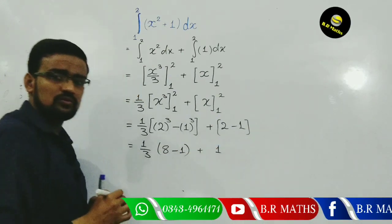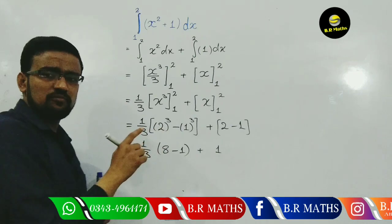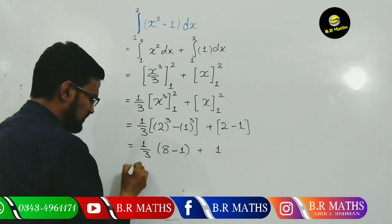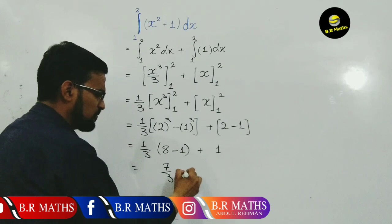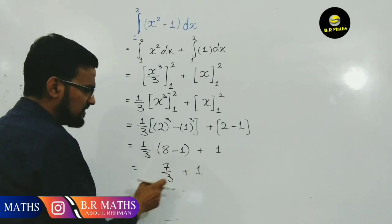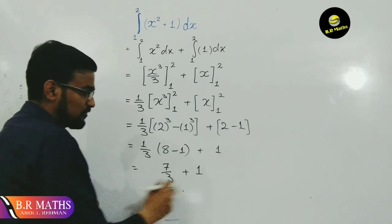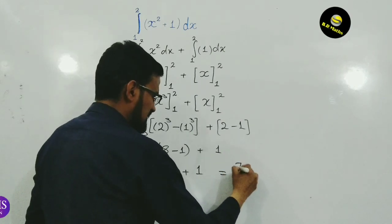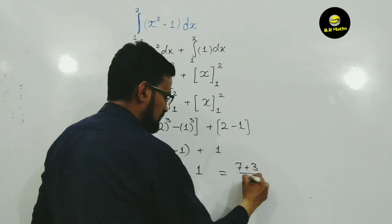So 8 minus 1 means 7, and this is 7 divided by 3 plus 1. So 7 divided by 3 plus 1 - student, take the LCM. 3 is the LCM, so 7 plus 3 over 3.